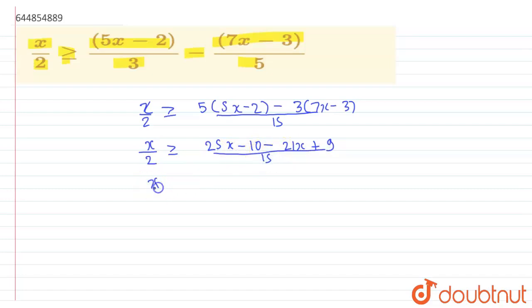If we solve again, we will get x/2 which is greater than or equal to 25x minus 21x which is 4x, and minus 10 plus 9 is minus 1, upon 15. So now what can we do?